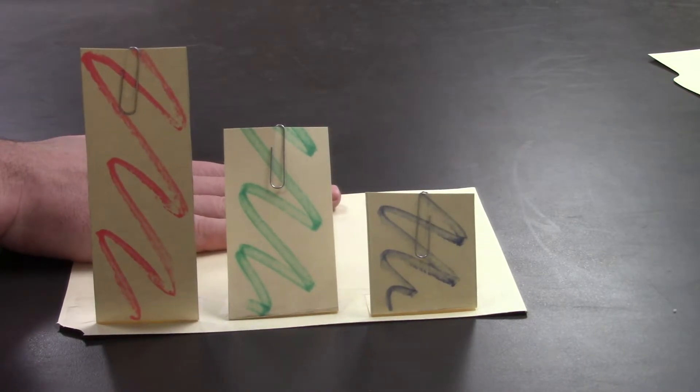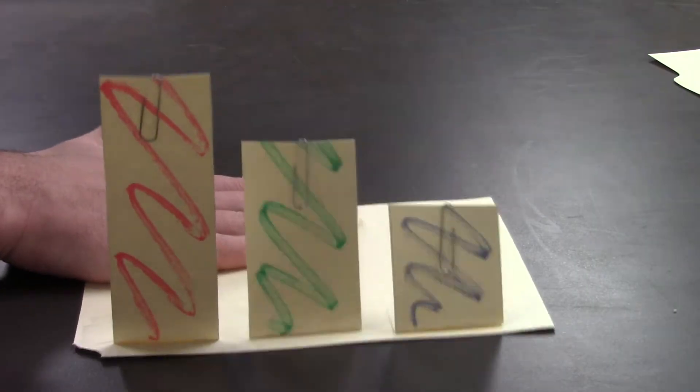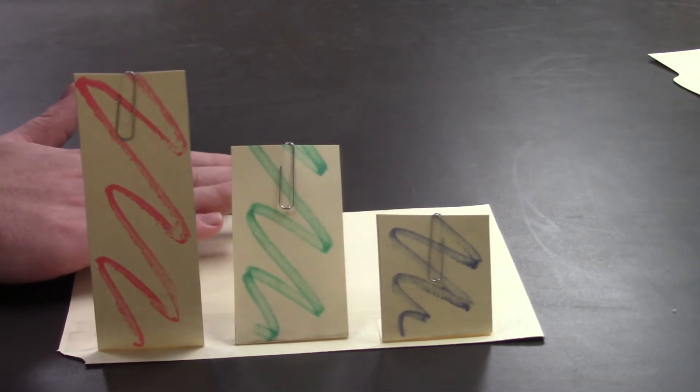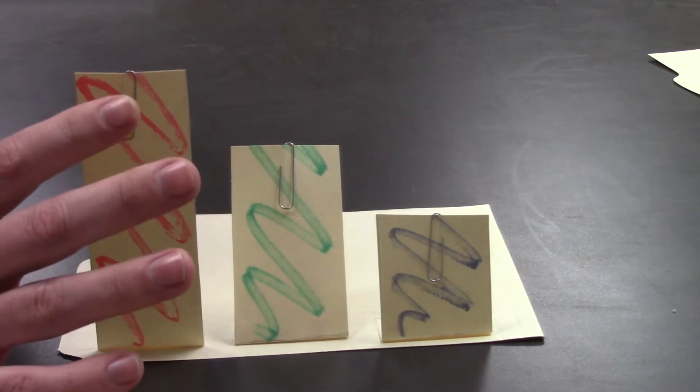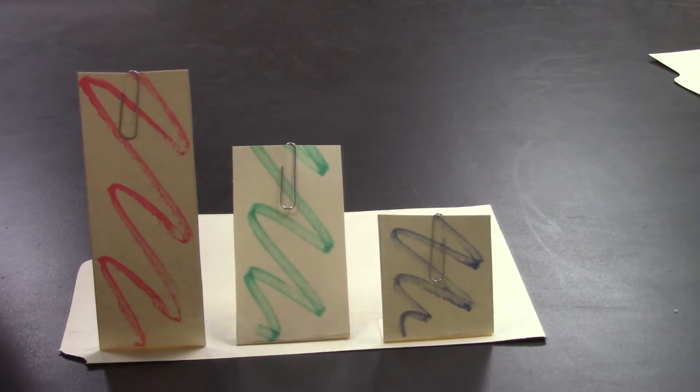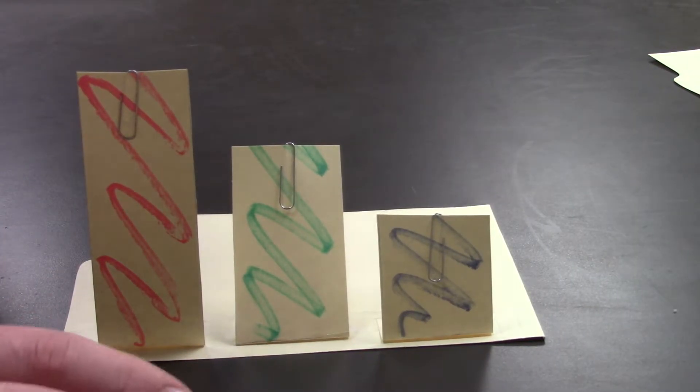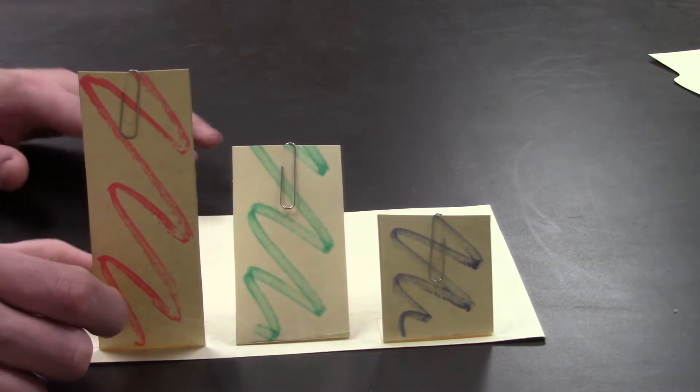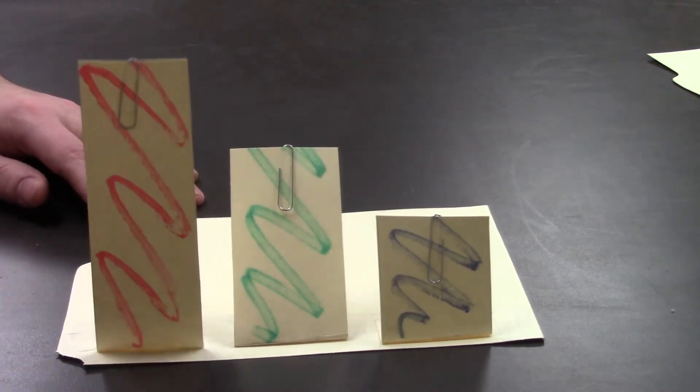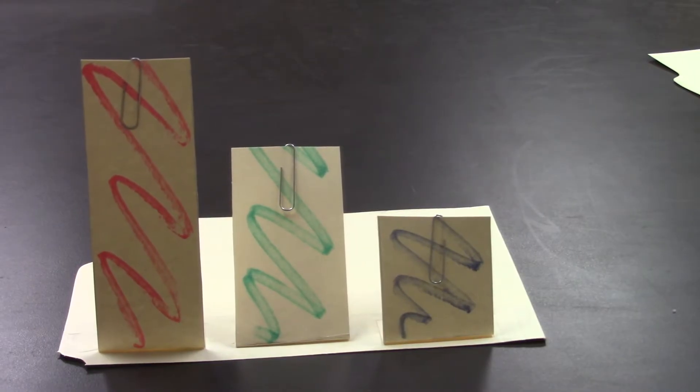So instead I'm gonna add energy by shaking and as I shake this piece of paper these different opsin proteins will send signals to the brain and that signal is in the form of wiggling back and forth. So as these wiggle more we can say that that's a stronger signal to the brain.